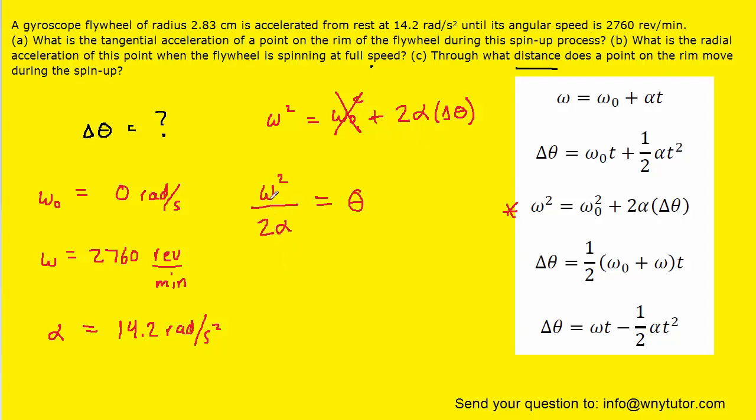And then at this point we can go ahead and plug in the known values. Remember that for the final angular velocity, we're going to have to convert it from revolutions per minute into radians per second. So we'll show that conversion.